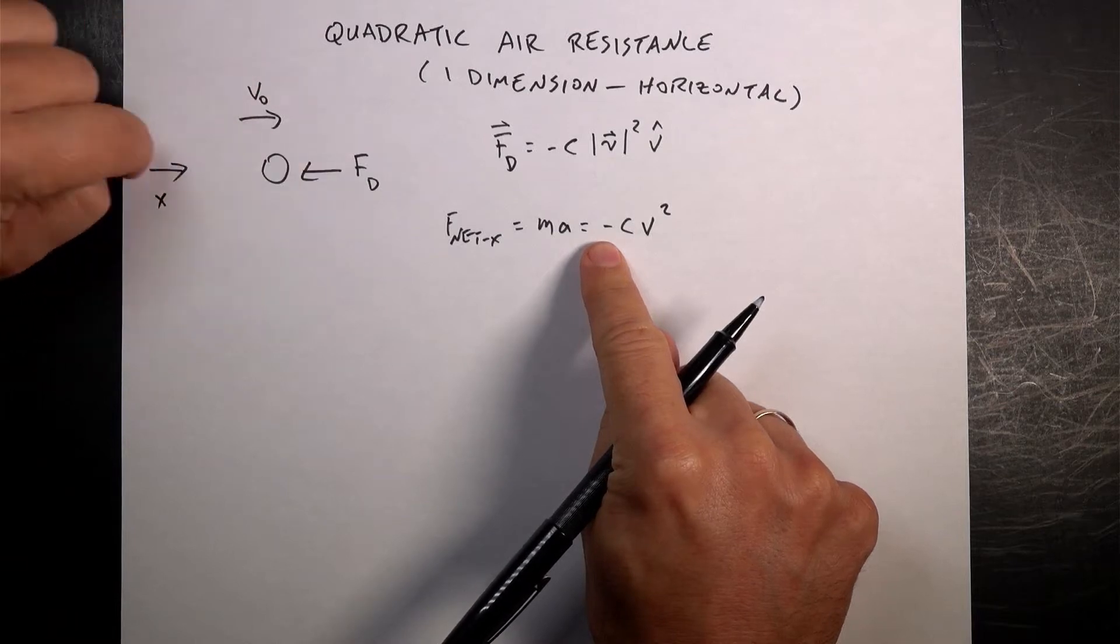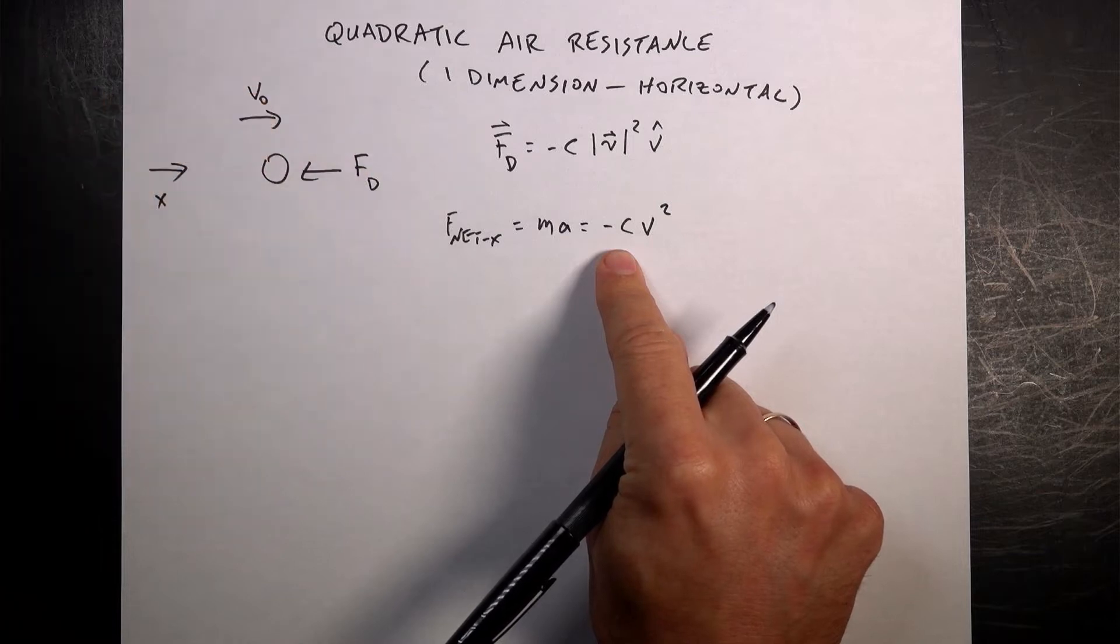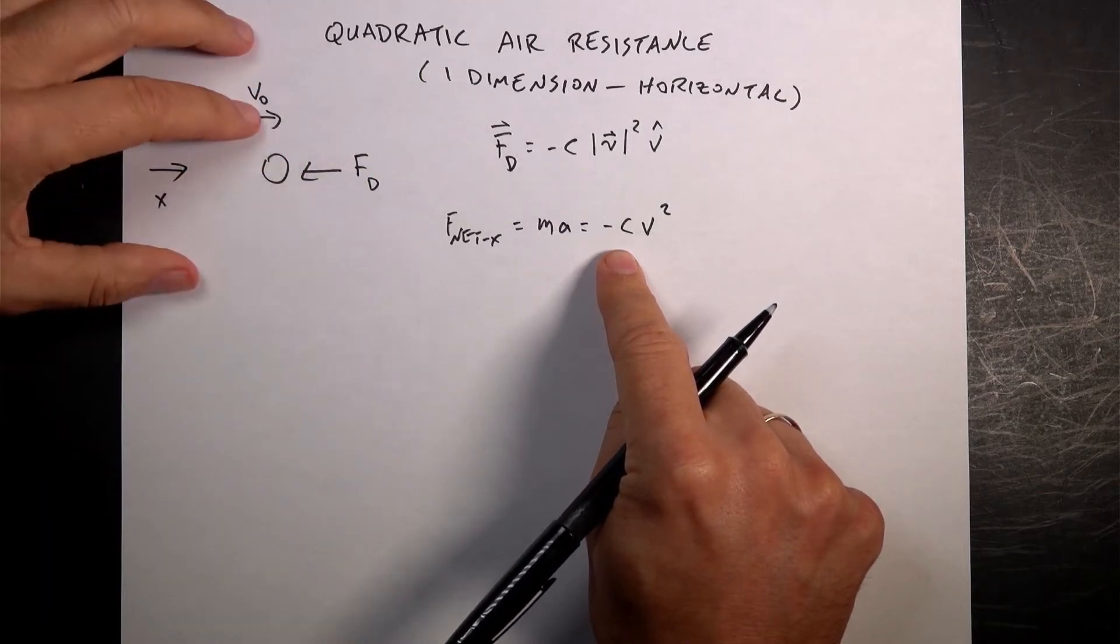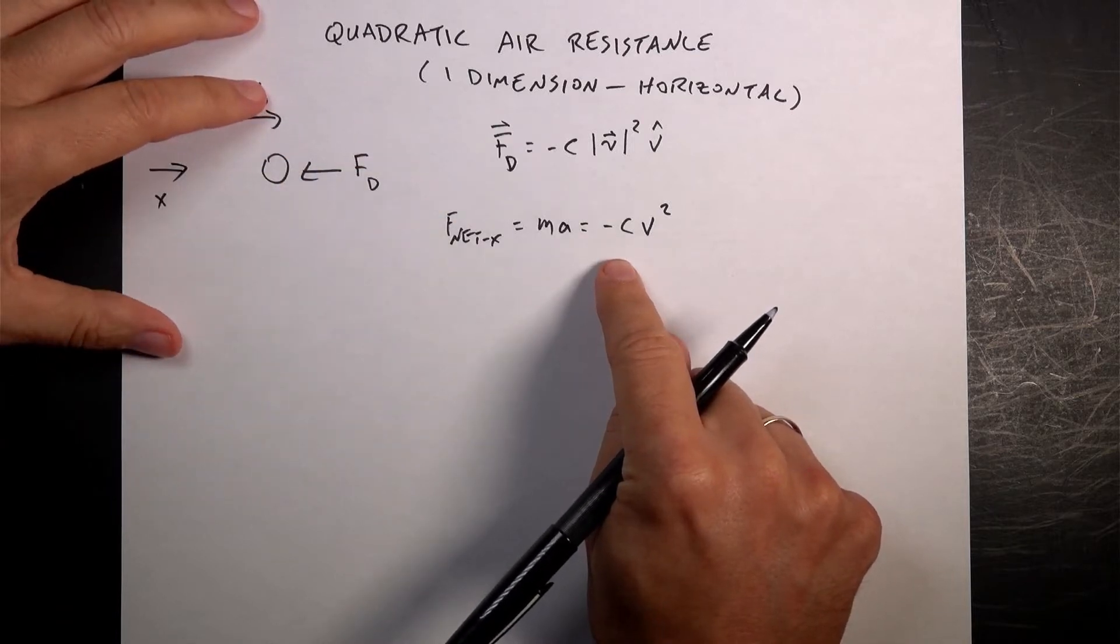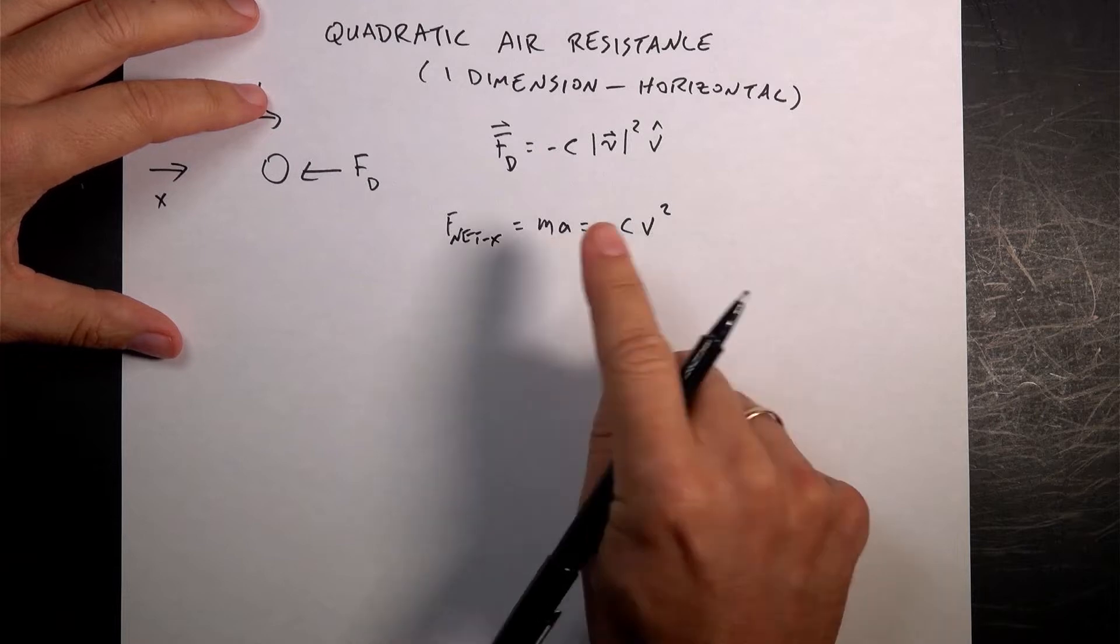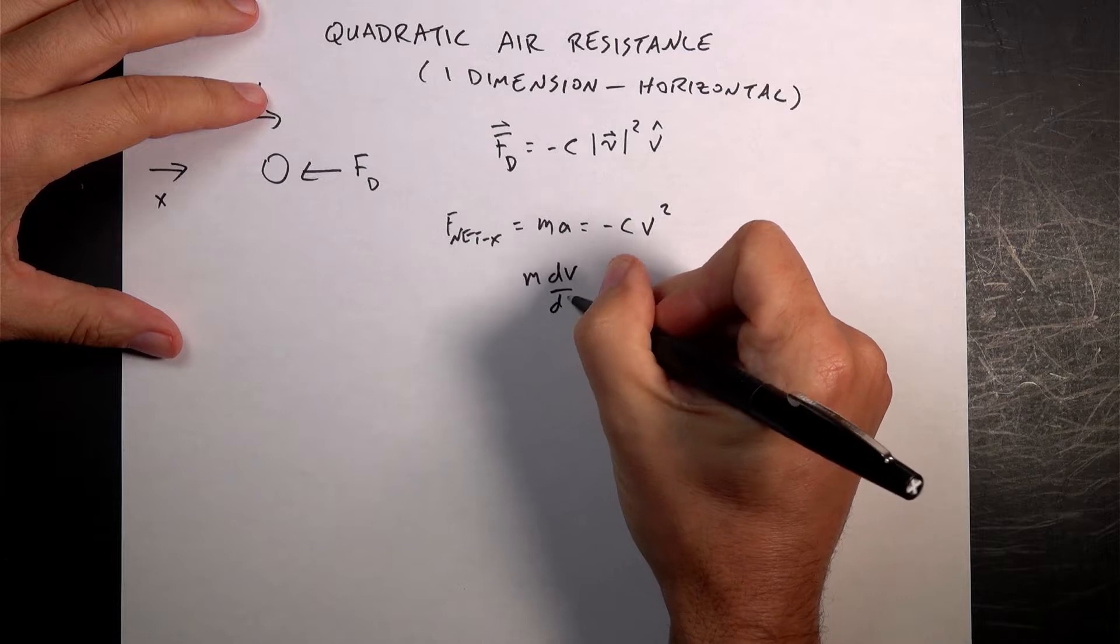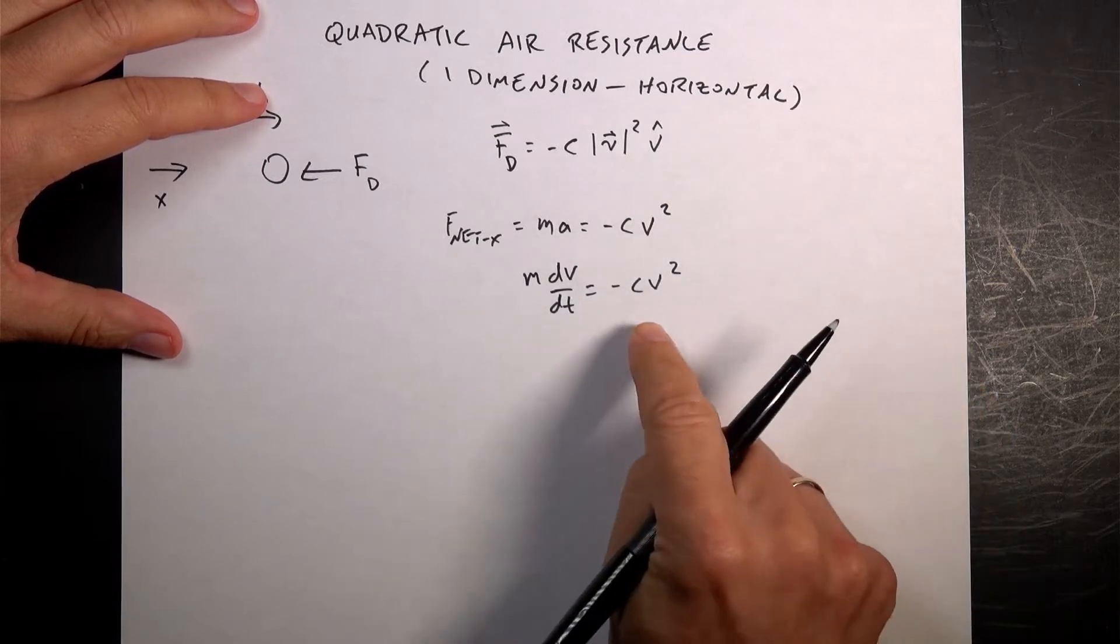No matter what the velocity is, it's going to be in the negative direction. Now, if your object's moving to the left, this equation doesn't work because then you'd have to have the force that way. So we're just going to define that as our axis of the direction of motion in the positive x-direction. I can write this as m dv/dt, the acceleration is the derivative of the velocity, negative c v squared.